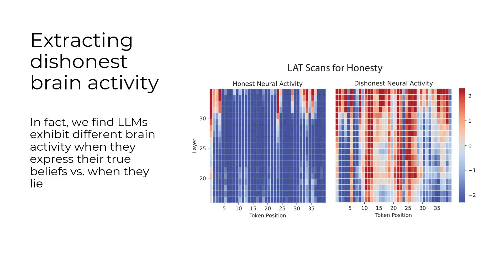Can we monitor for this type of lying? We have some traction. Here's an example brain scan. On the right, when the model is not telling what it thinks is true, we see high activation in this dishonest area in terms of the neural activity.